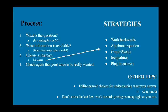Before getting into the actual topics, let's talk about the process. First, figure out what the question is asking — is it asking for x or 3x, profit or revenue? I recommend underlining or circling the actual question being asked. Next, figure out what information is available; I like to make a table with the different values for each variable given. Then choose a strategy: working backwards from the answer choices, using an algebraic equation, graphing or sketching, using inequalities, or plugging in answer choices.